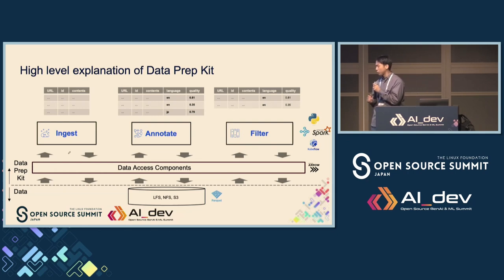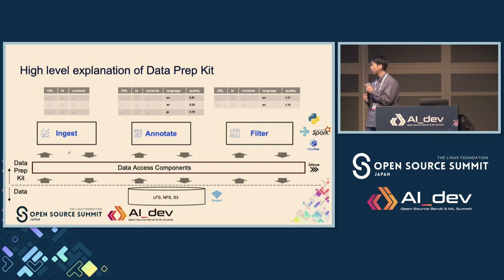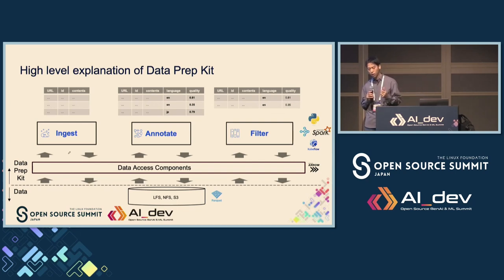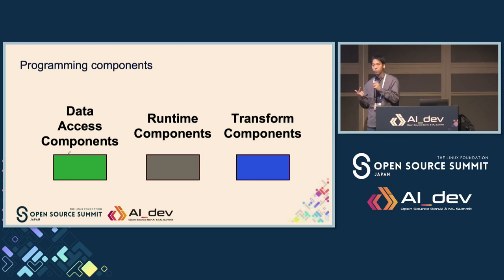Data Prep Kit uses Parquet as its structured format. By providing customizable data access components, Data Prep Kit supports various data source types including local file systems, network file systems, and S3-compatible data sources. Data Prep Kit handles Parquet files using Apache Arrow. For runtimes, Data Prep Kit supports pure Python, Ray-based runtime, and Spark runtime. The Ray-based implementation makes automation easy using Kubeflow.